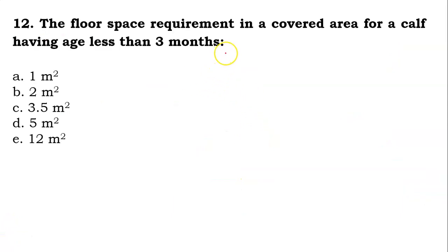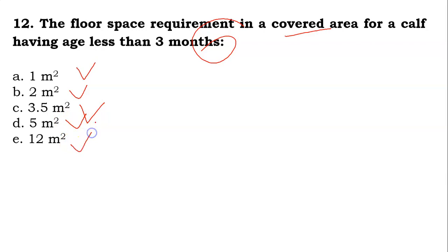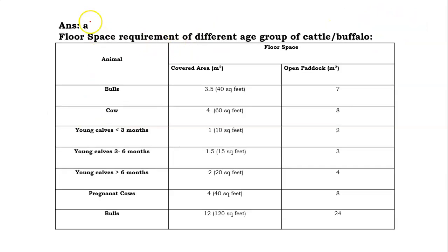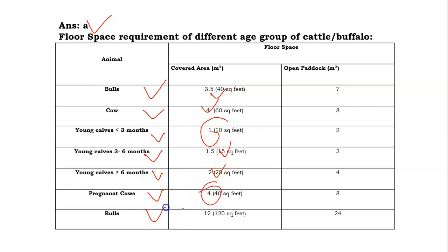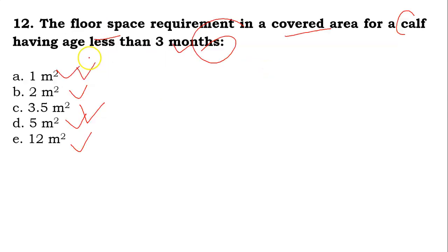The twelfth question: the floor space requirement in a covered area for a calf having age less than 3 months is 1, 2, 3.5, 5, or 12 sq meters? Its answer will be A — it is 1 sq meter. In the chart: bull requires 3.5 sq m, cow 4 sq m, young calf less than 3 months 1 sq m, young calf 3 to 6 months 1.5 sq m, young calf greater than 6 months 2 sq m, pregnant cow 4 sq m, and bulls 12 sq m. Answer is A.